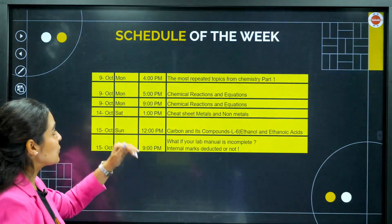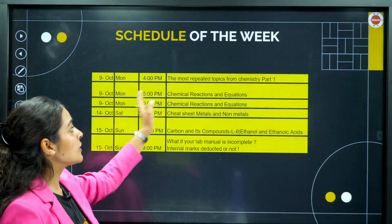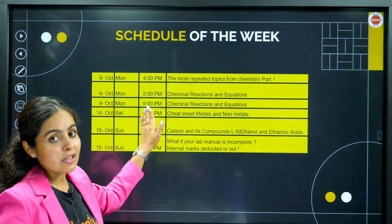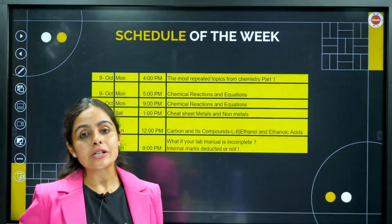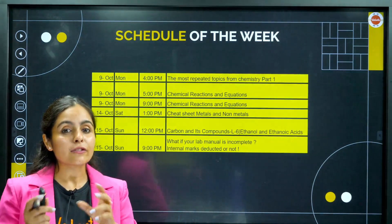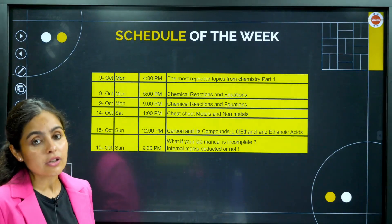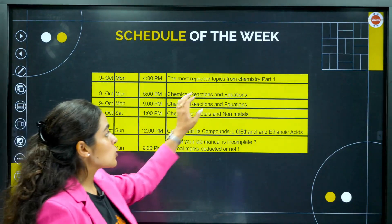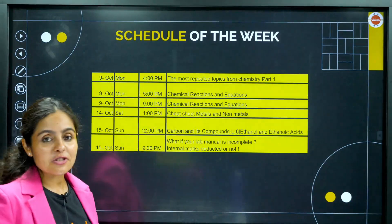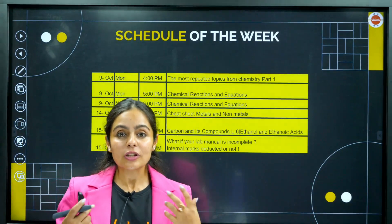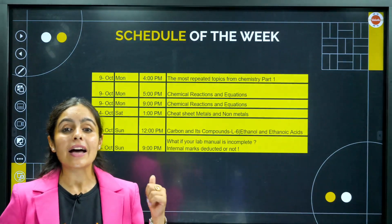Let's take a look at the schedule of the week. Brothers and sisters, we have completed the most repeated topics of chemistry. If you missed that session, do check it out, because I have taken a sample paper and put questions for you where you can see that the question is changing but the topics are repetitive mostly every year. Part 1 was released; Part 2 will come soon — chemical reactions and equations, NCERT line by line.